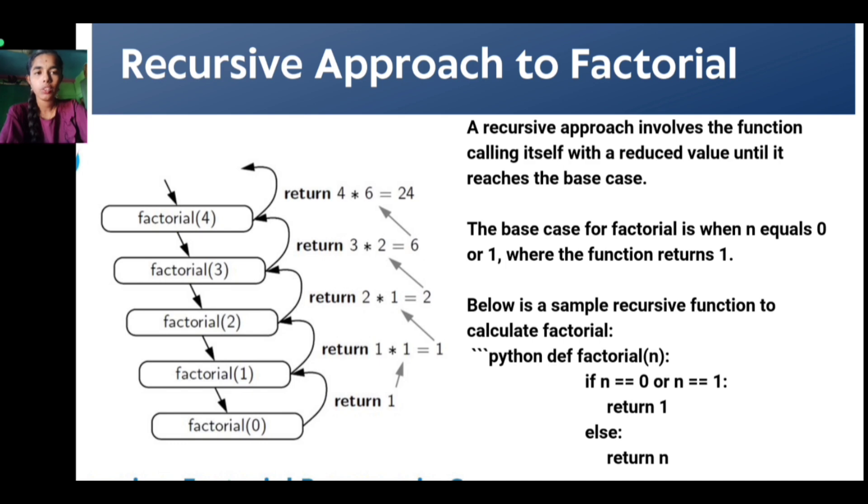In Python: def factorial(n): if n == 0 or n == 1: return 1; else: return n * factorial(n-1).